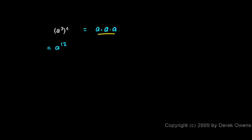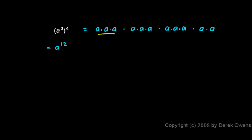We have a cubed multiplied together four times. In other words, I have four of these: a times a times a, times a times a times a, times a times a times a, times a times a times a. So you see I have an a cubed, a cubed, a cubed, and a cubed all multiplied together — four of these things. And you can see that there are a total of 12 a's there multiplied together, so I have a to the 12th for my answer.